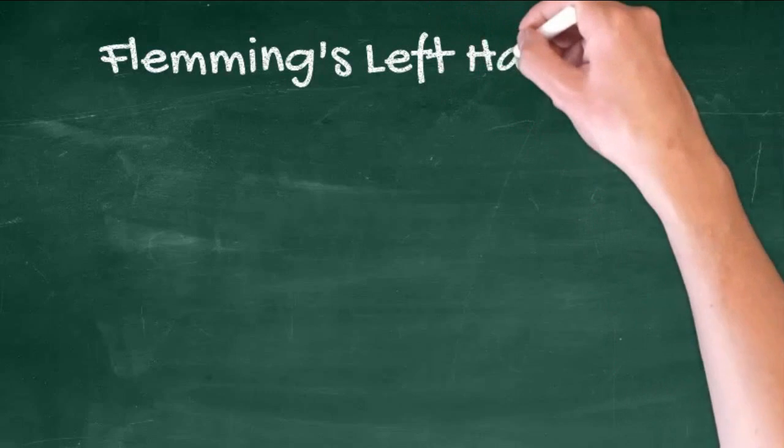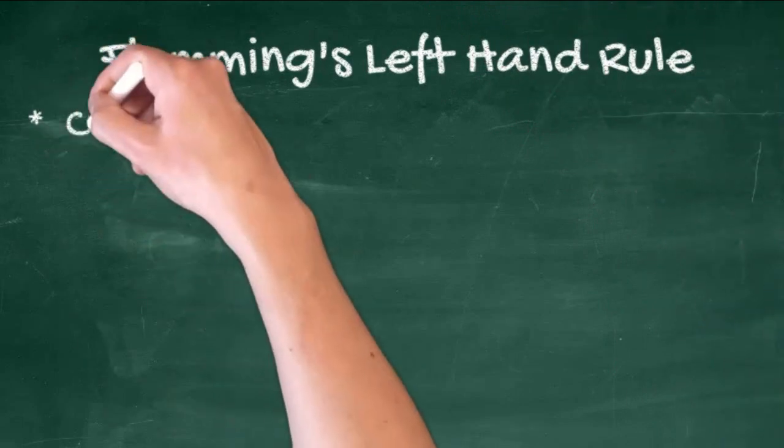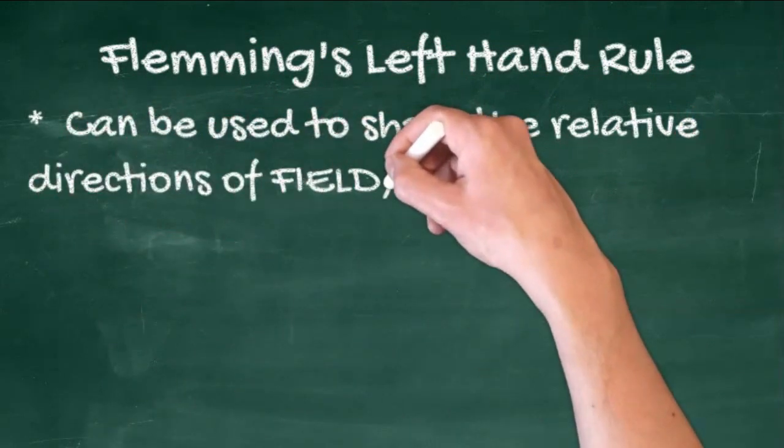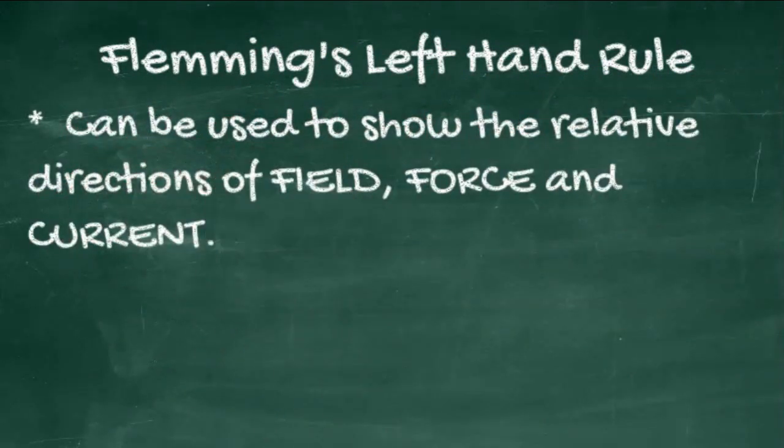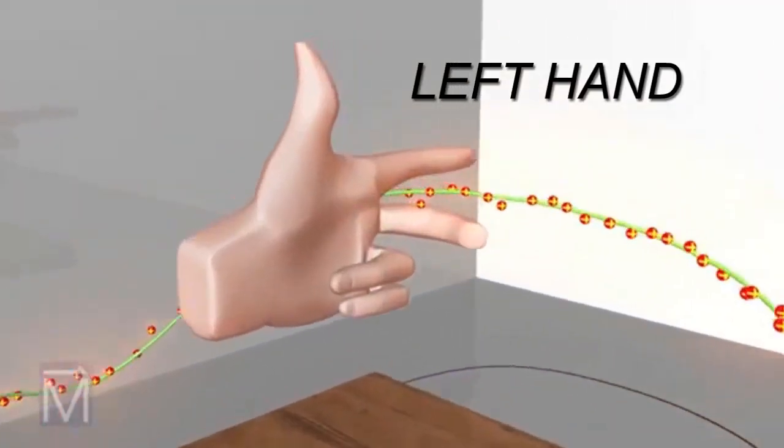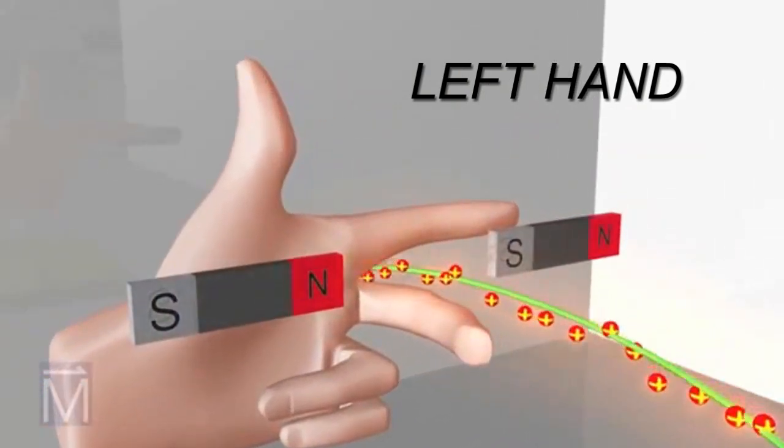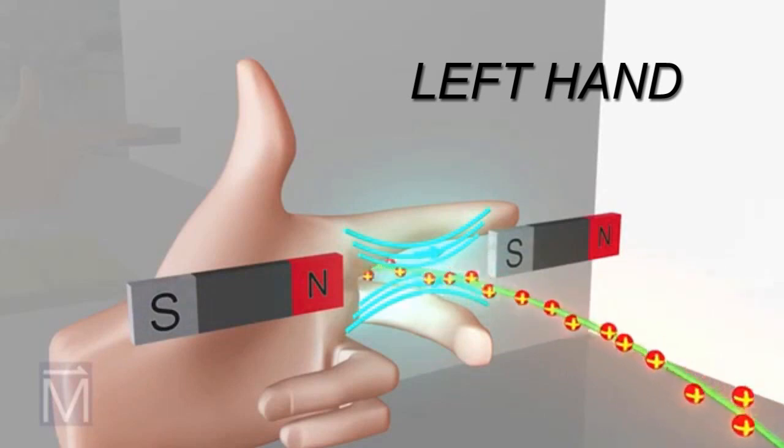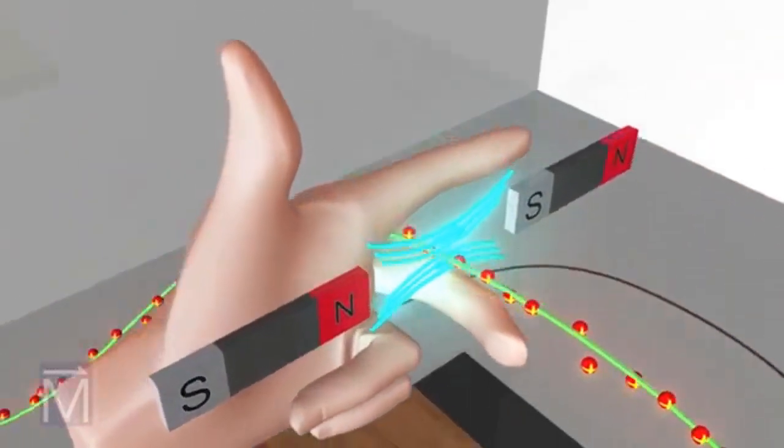Fleming's left hand rule can be used to show the relative directions of the field, the current, and the resulting force. These two magnets provide that field, depicted here by the blue lines. When charged particles enter a magnetic field, the field exerts a force on them. You can use your hands to find out the direction of that force.